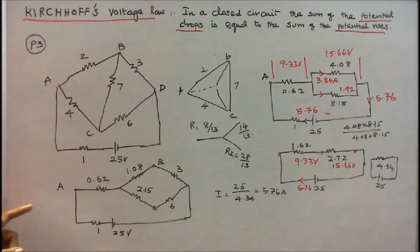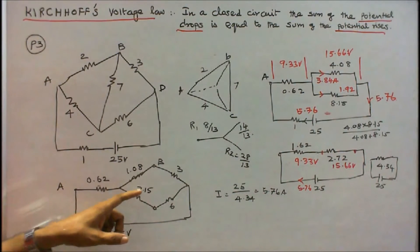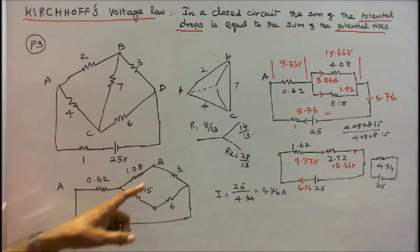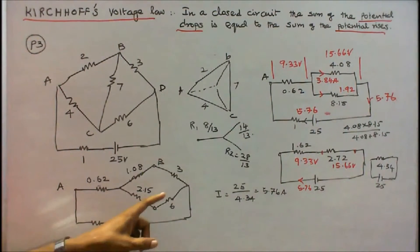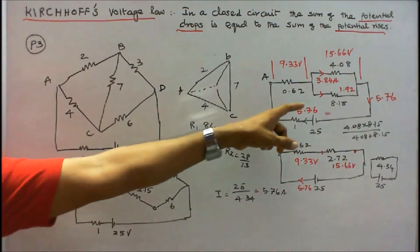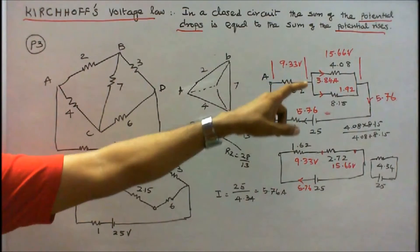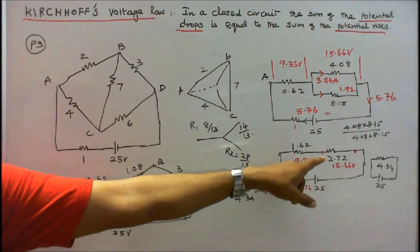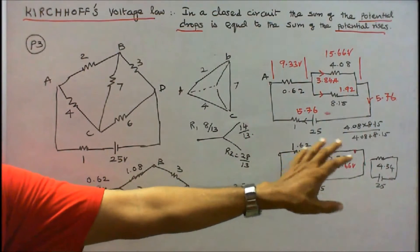The redrawn diagram shows: 0.62 ohms, 1.08 ohms, 2.15 ohms, 3 ohms, and 6 ohms. Two resistors in series: 3 + 1.08 = 4.08 ohms. Two more in series: 2.15 + 6 = 8.15 ohms. These two are in parallel, so the equivalent resistance is (4.08 × 8.15) / (4.08 + 8.15) = 2.72 ohms. Then 1 + 0.62 = 1.62 ohms in series. The total resistance is 4.34 ohms.